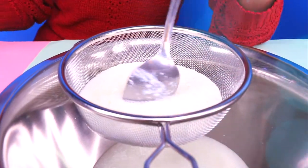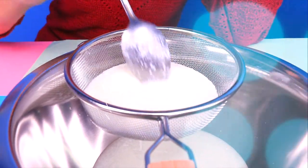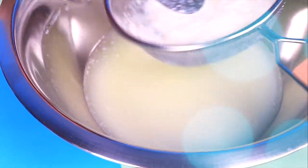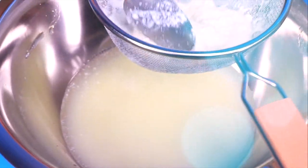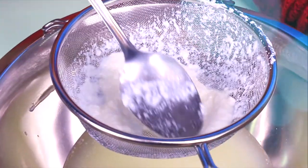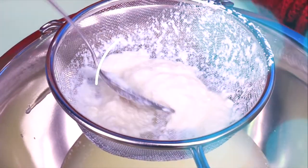We will use a spoon to mix it a little so all the water comes down. Look! All the water is in the bowl and everything on the strainer is what we're going to use. This looks like a mash but this is actually all the milk's protein.